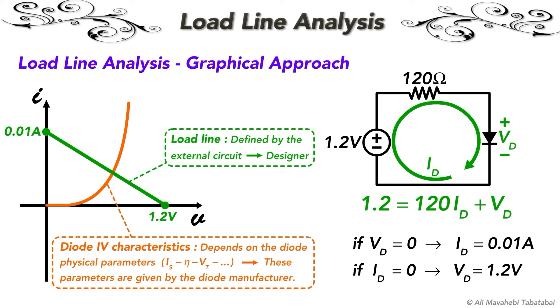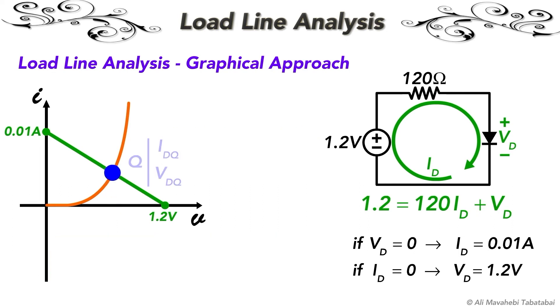The point of intersection between the load line and diode IV characteristics is the quiescent point which is also called the Q point. As you see, by changing the parameters of the external circuit, we can change the slope of the load line and also the Q point of the diode.